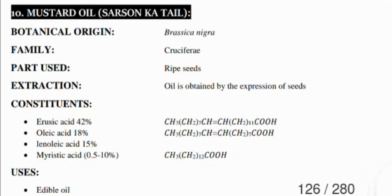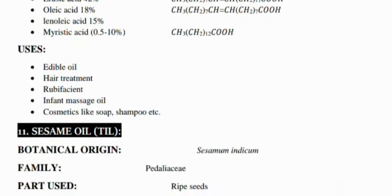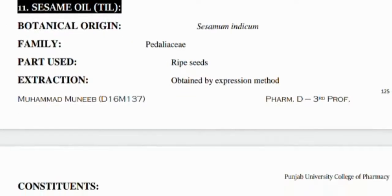The tenth one is mustard oil, known as Brassica nigra, with the Cruciferae family, with ripe seeds as the part used. It is used as an edible oil, in hair treatment, and as a rubefacient.